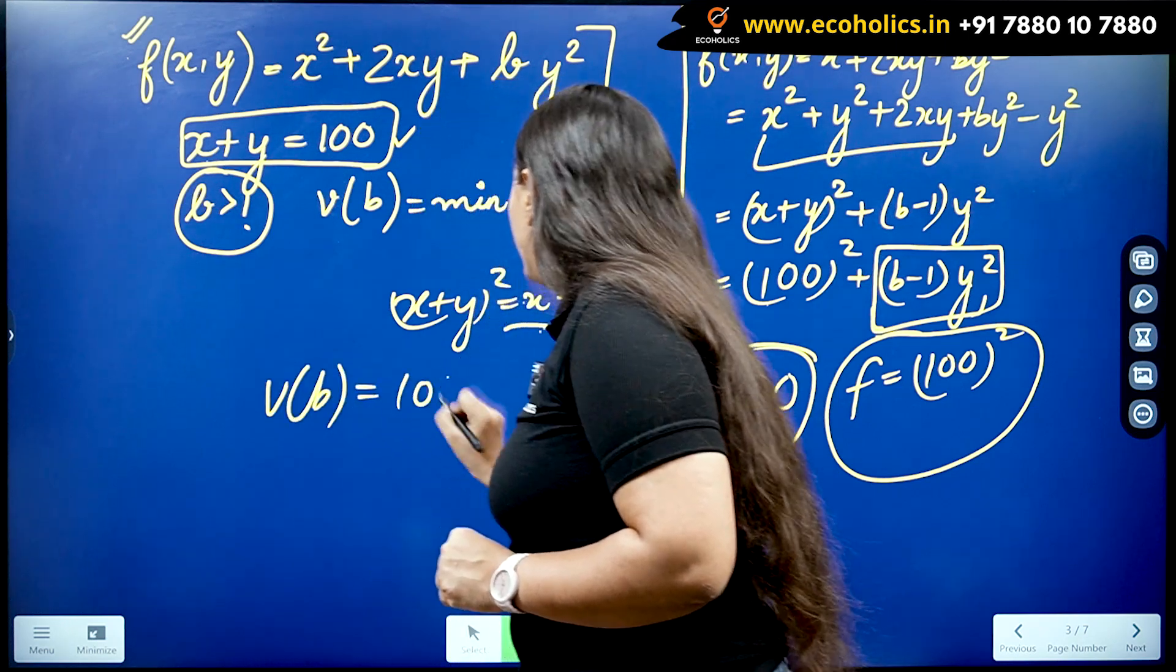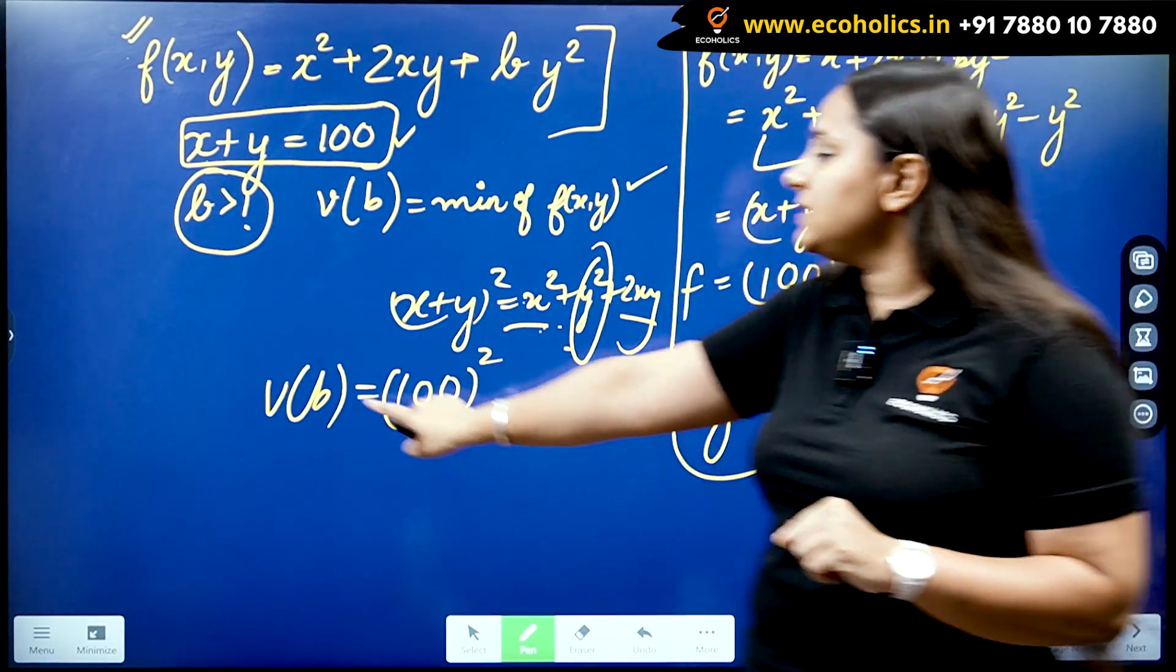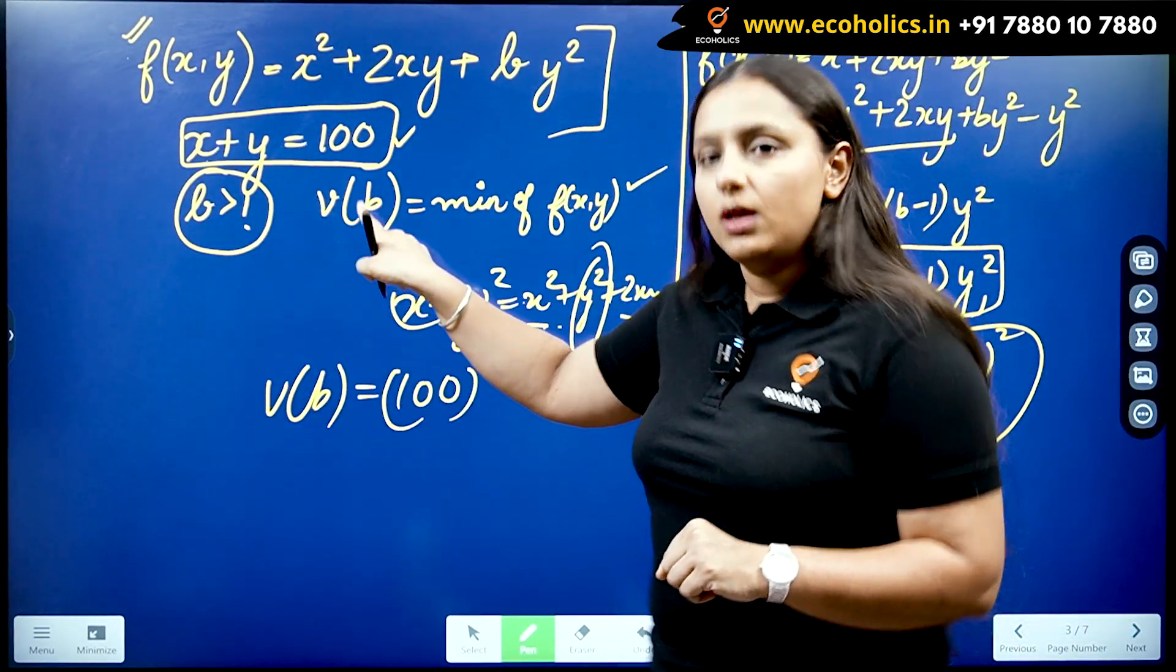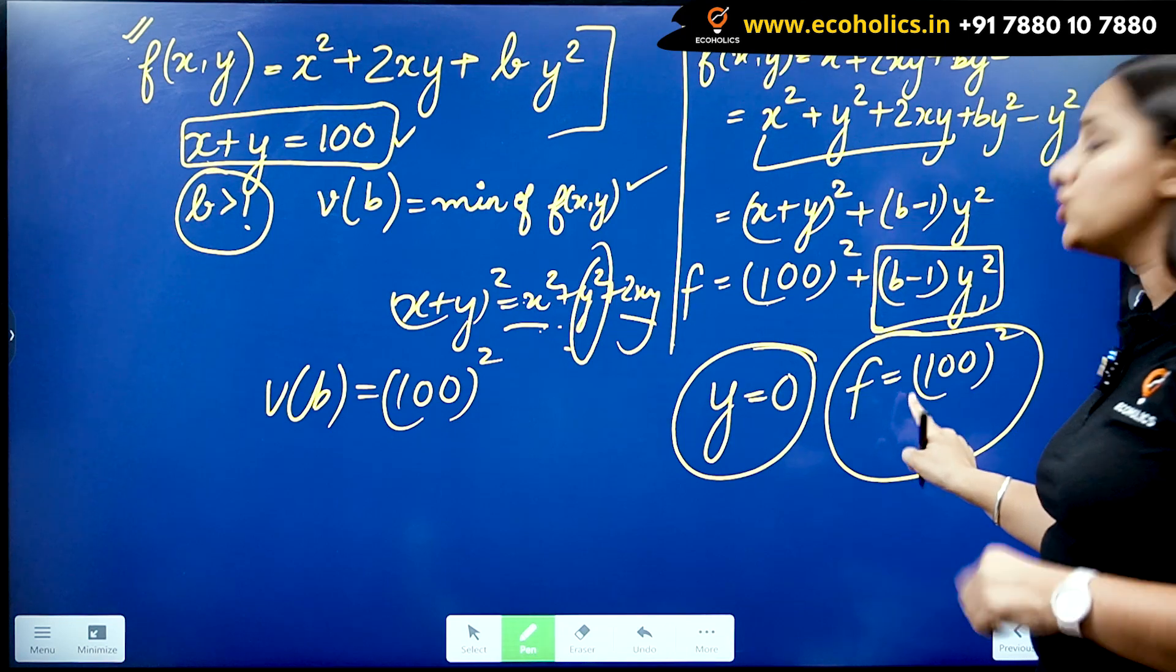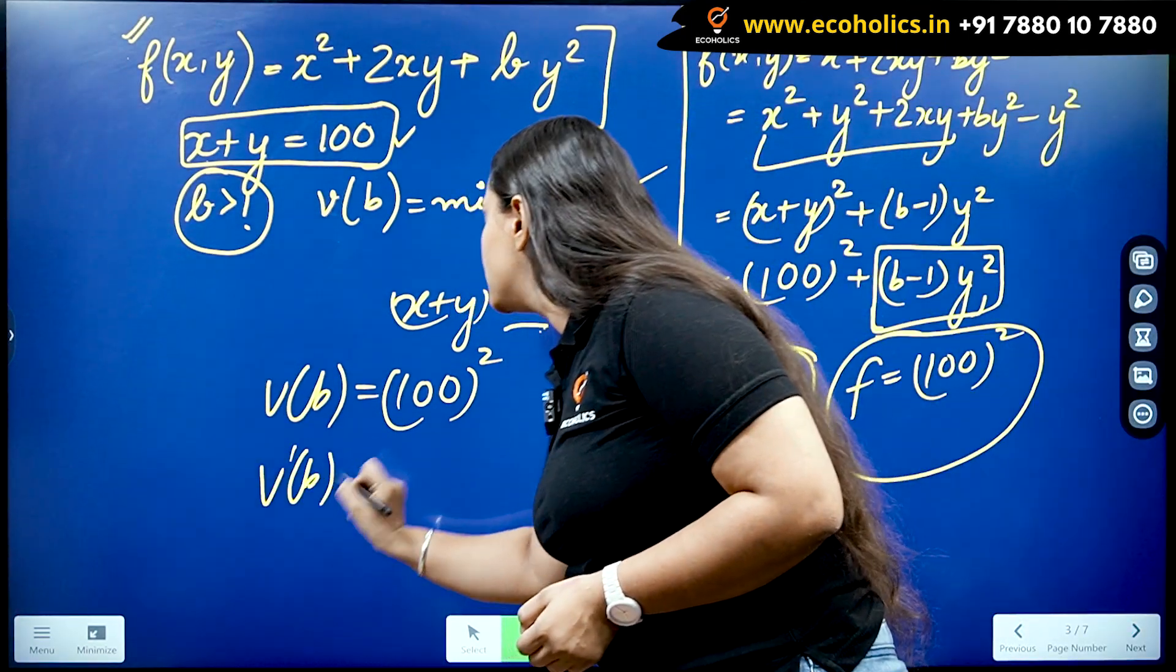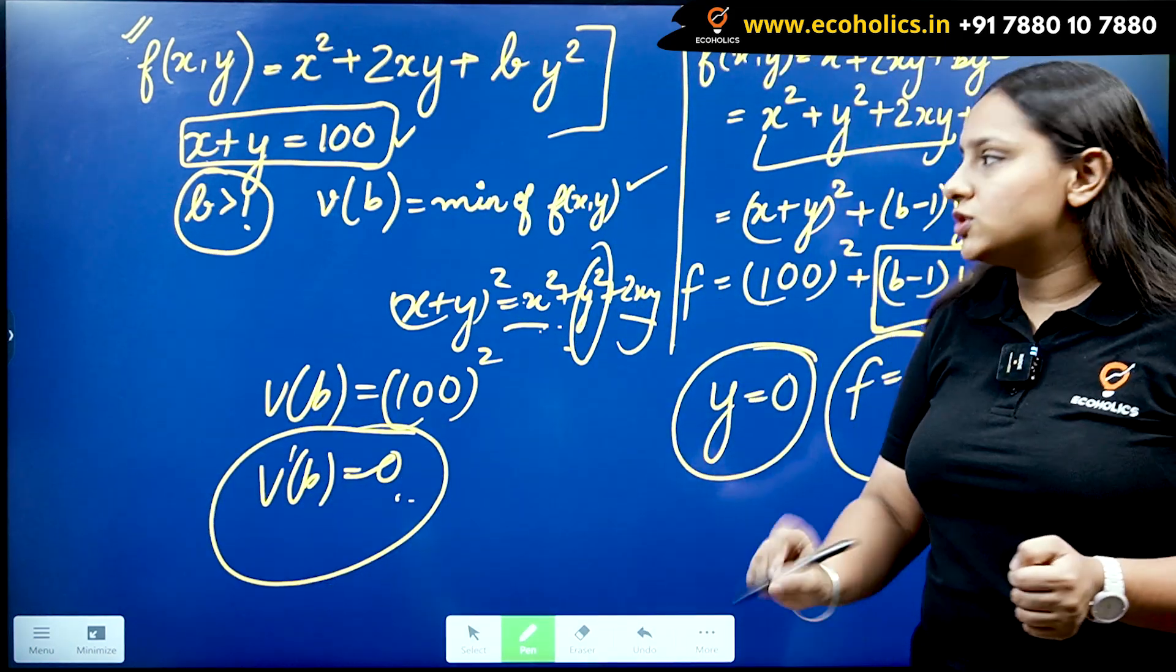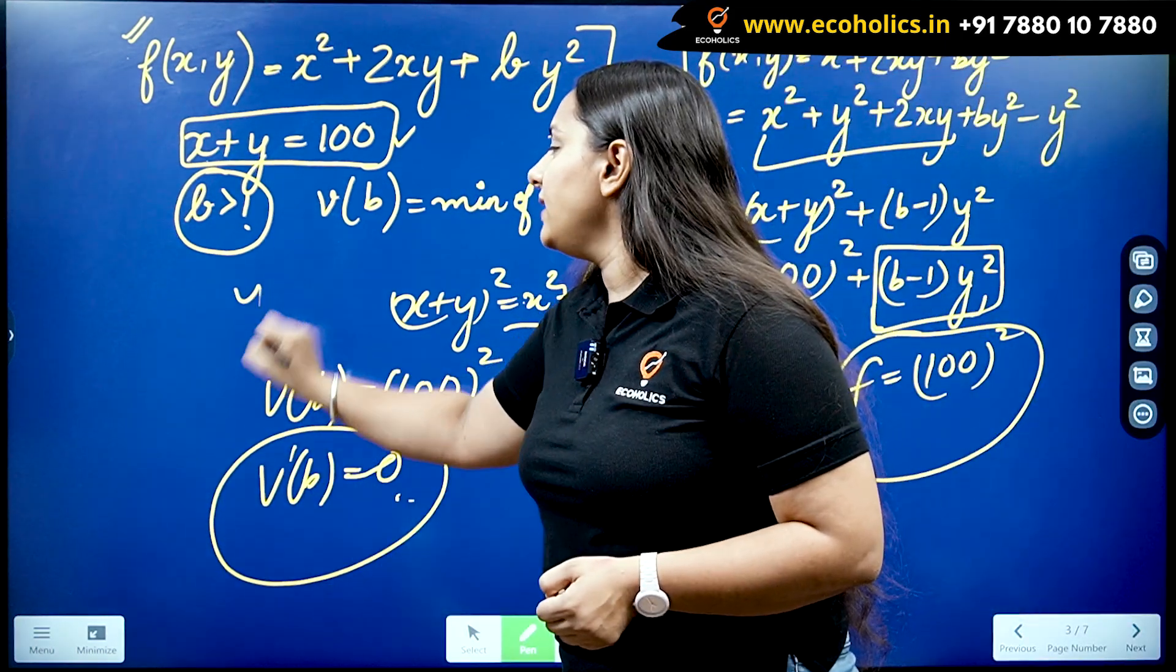So let us come to this side. v(b) is going to be 100². So if I do its derivative, since you can see v has to be in terms of b but we are getting the v function without b, so if I do its derivative, it's going to be equal to 0.